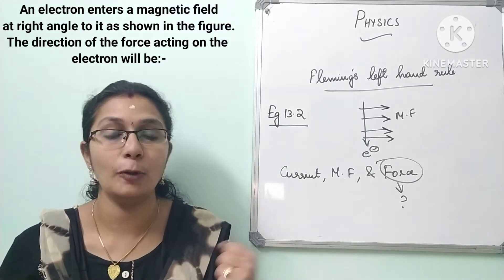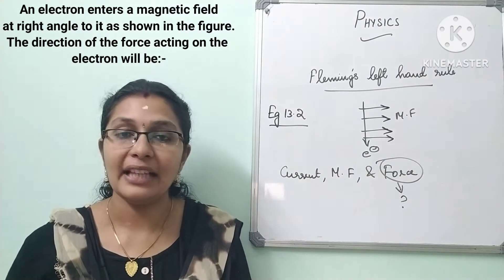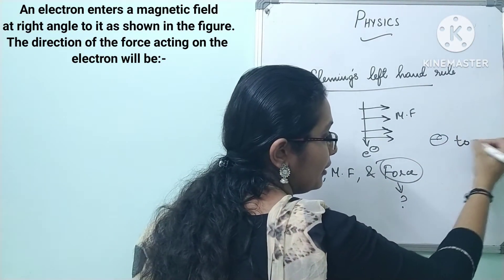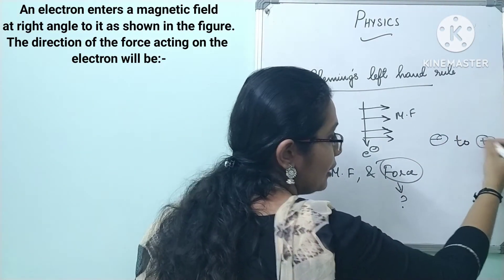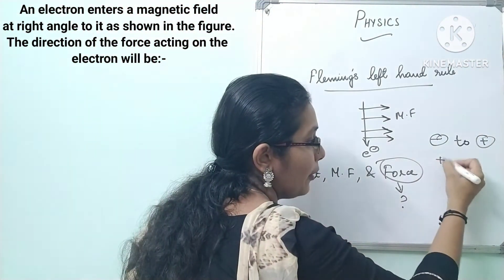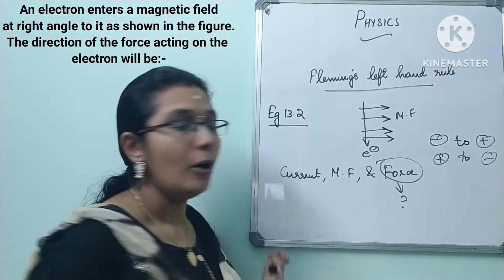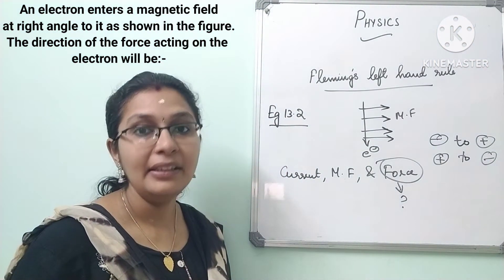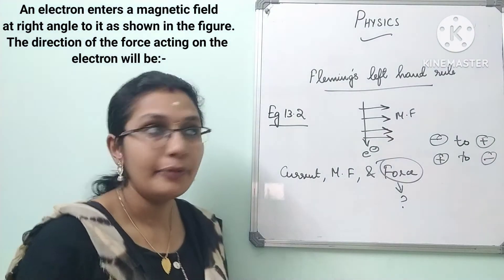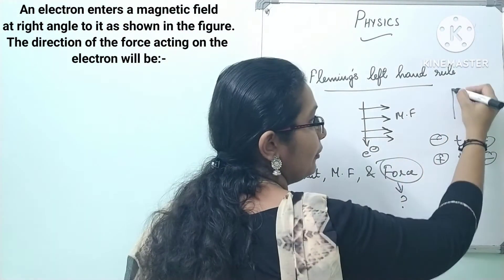We already know that the direction of conventional current is always opposite to the direction of electron flow. The electron moves from negative to positive, so our current direction will be opposite to the electron — positive to negative. In this question, the direction of the electron is facing like this, so the direction of current will be moving like this.